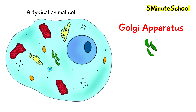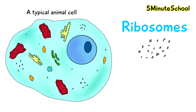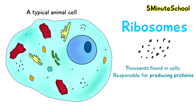The Golgi body is this structure here. It's responsible for processing and packing proteins and lipids produced by the cell. These black dots dotted around the cell are called ribosomes. There are thousands of these ribosomes found around the cell and they are responsible for producing proteins.